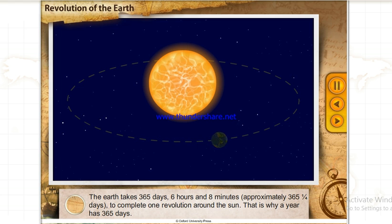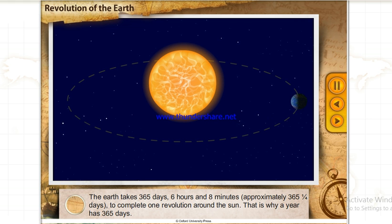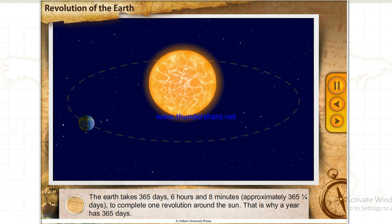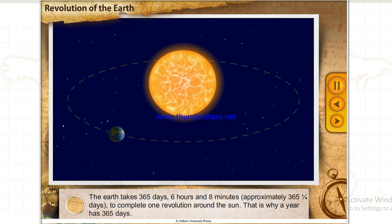The Earth takes 365 days, 6 hours and 8 minutes, approximately 365 and one-fourth days to complete one revolution around the Sun. That is why a year has 365 days.